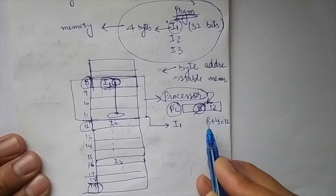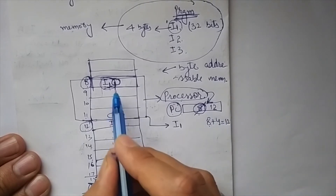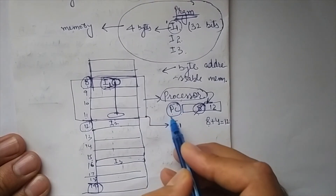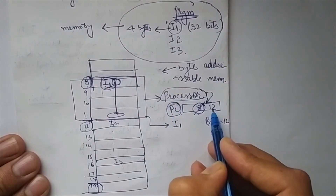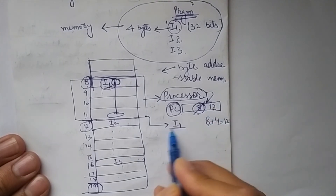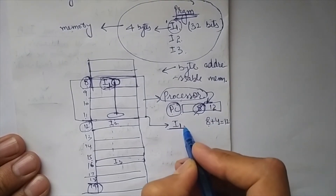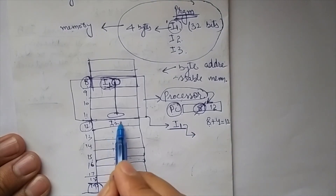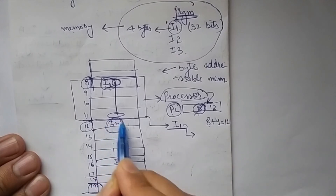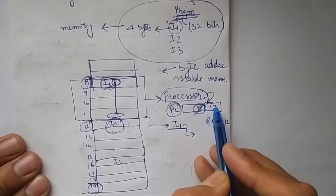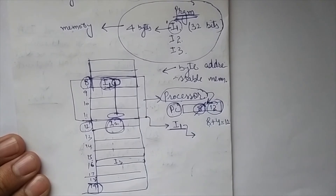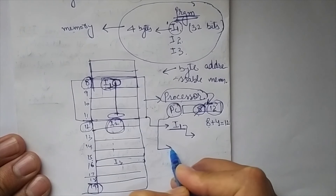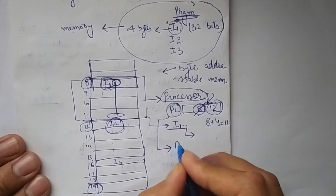The new PC value is 12, which is the address of instruction I2. We add 4 because every instruction is 4 bytes. So after executing I1, the PC already holds 12 — the address of I2 — which is exactly the next instruction to execute. This is how the program counter tracks sequential execution.